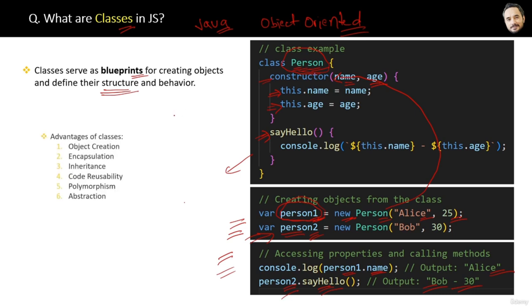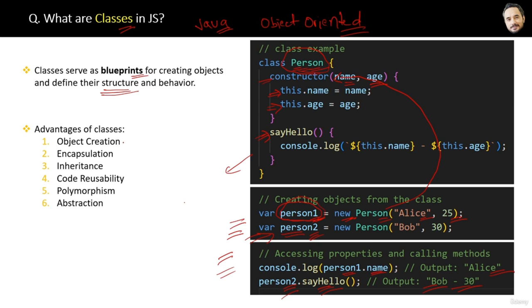Advantages of classes: they are used for object creation, they follow object-oriented principles providing encapsulation (data safety), inheritance (reusability), polymorphism, and abstraction. These are the benefits of using classes in JavaScript — it is a very deep level discussion that may be covered separately.